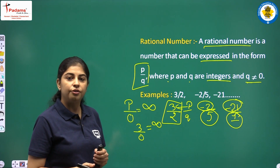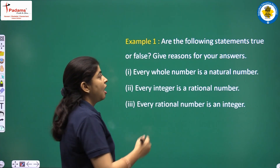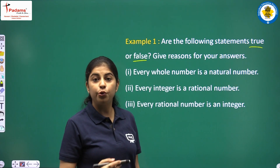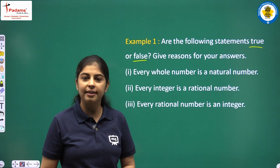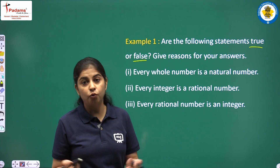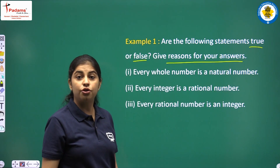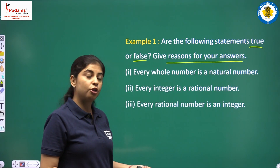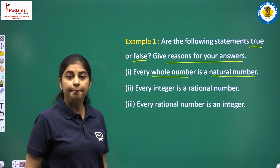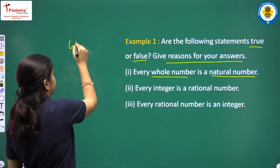Now let's do some NCERT examples. Example 1: Are the following statements true or false? You have to say whether each statement is true or false, but just saying true or false is not enough. You also have to give the reason — why it is true or why it is false, as the question says 'Give reason for your answer.'